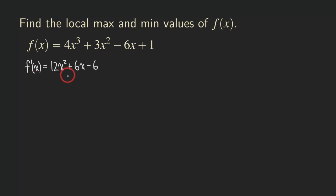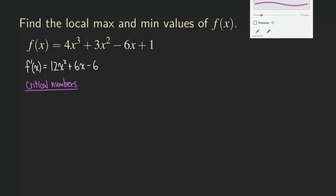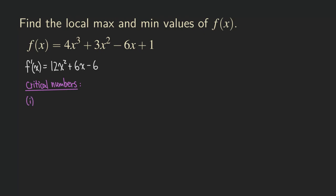When we find the critical numbers, we have two cases: either f prime is equal to zero, or f prime does not exist. For the case when f prime is equal to zero, we set the first derivative equal to zero and then try to solve this equation. That means 12x squared plus 6x minus 6 equals zero.